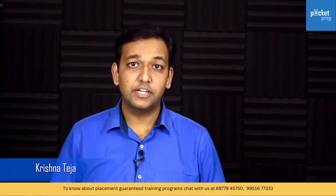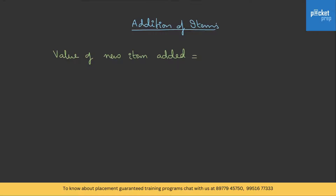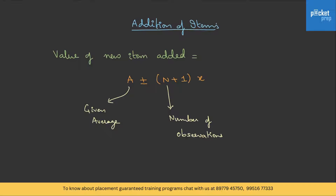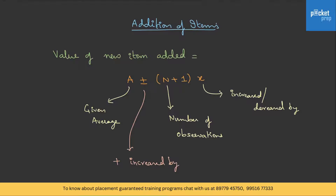Now let's learn about addition and removal of items. When a new item is added, its value equals a ± (n+1)×x, where a is the given average, n is the number of observations, and x is the value by which the average increased or decreased. We use plus when increased by and minus when decreased by.